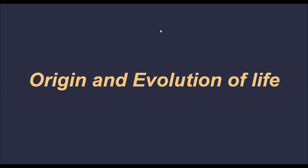Hello everyone, welcome to another video on the origin and evolution of life. Up till now we have been discussing various theories — in the initial part of the chapter we discussed the theories of origin of life: special creation, abiogenesis, biogenesis, then chemical evolution of life put forth by Oparin and Haldane, which was further proved by Urey and Miller. Their experiment showed that life began with chemical evolution, that is, organic molecules interacted with one another and gave rise to the first cell.